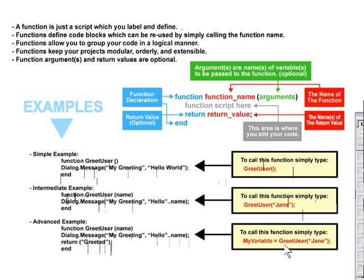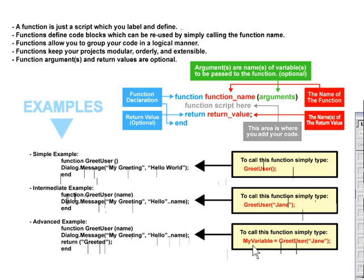The way to call this function, as you can see here on the right, is simply a version of what we did in the intermediate example, where we've named a variable and assigned it the value of that function. So instead of saying greetUser(Jane), this time we've said my_variable = greetUser(Jane).